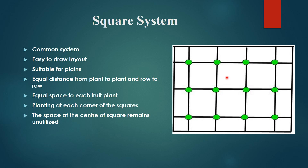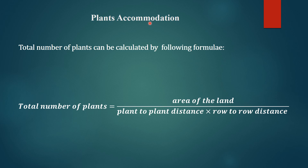The space at the center of the square remains unutilized. This is the disadvantage of this system — this center space remains unutilized. Plant accommodation: total number of plants can be calculated by the following formula. Total number of plants is equal to area of the land, divided by plant-to-plant distance multiplied by row-to-row distance.